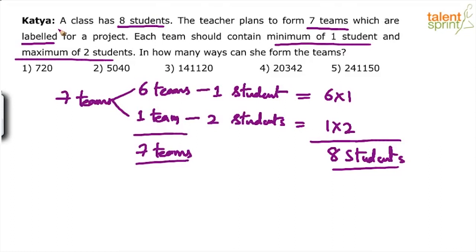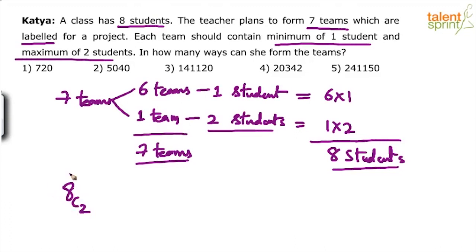Now how do you solve it? Very simple. Let us first identify the number of ways in which you can choose the two students who will be together. All the other students will be separate. So in how many ways can you choose two students out of eight students? In 8C2 ways.